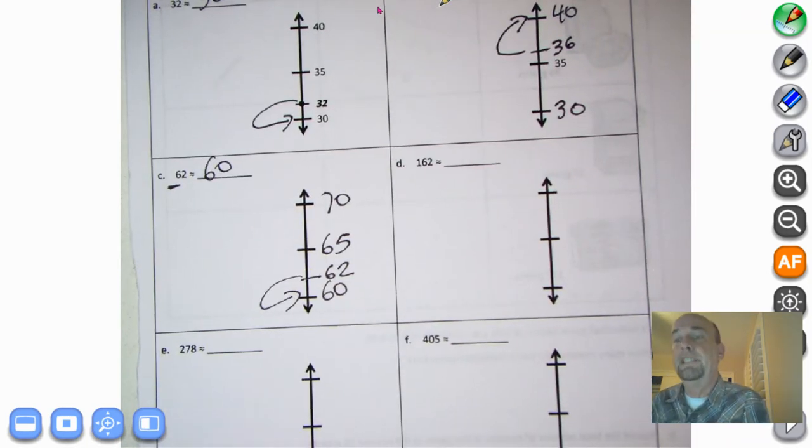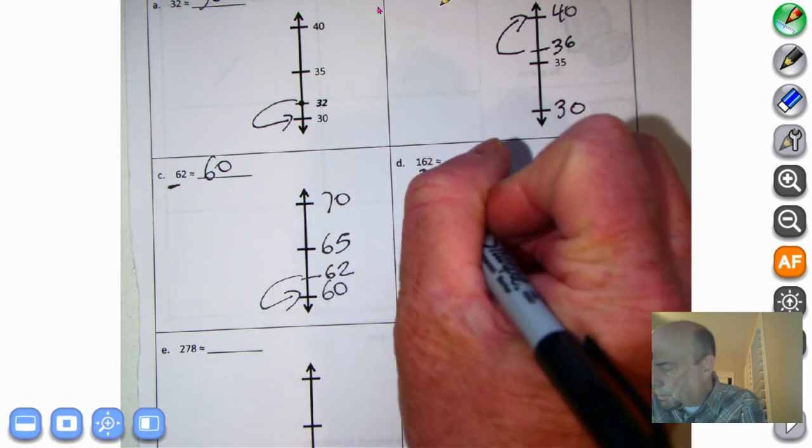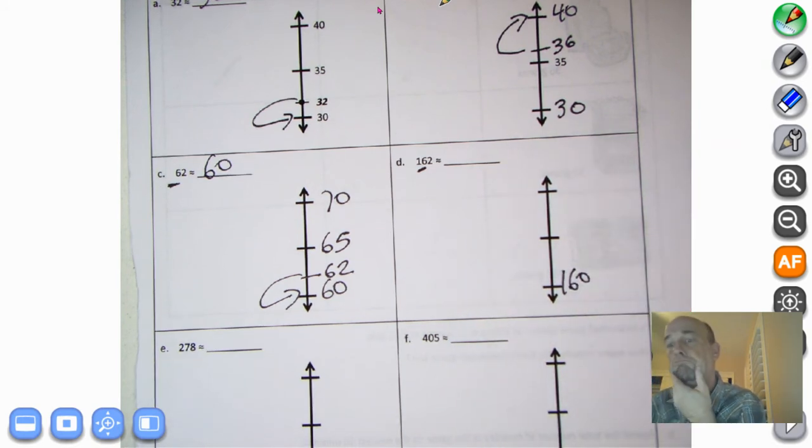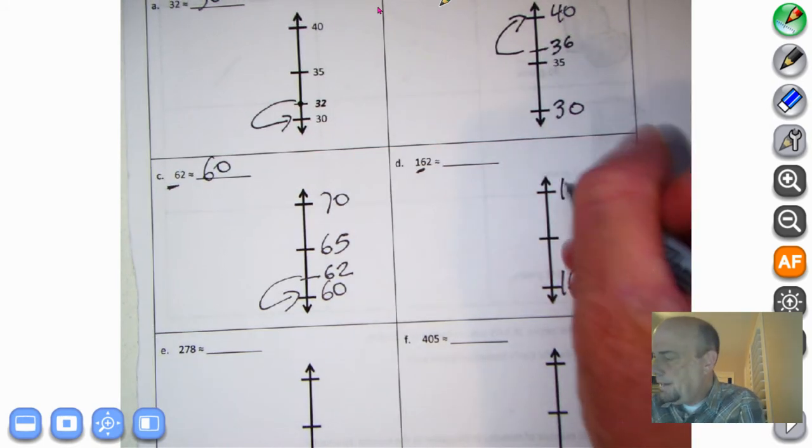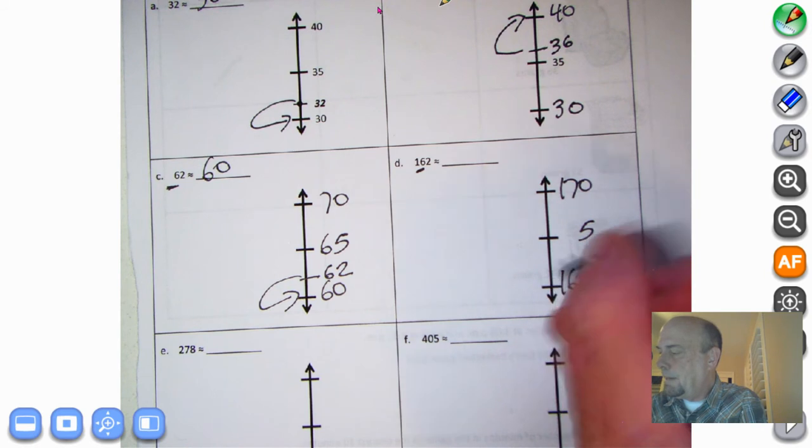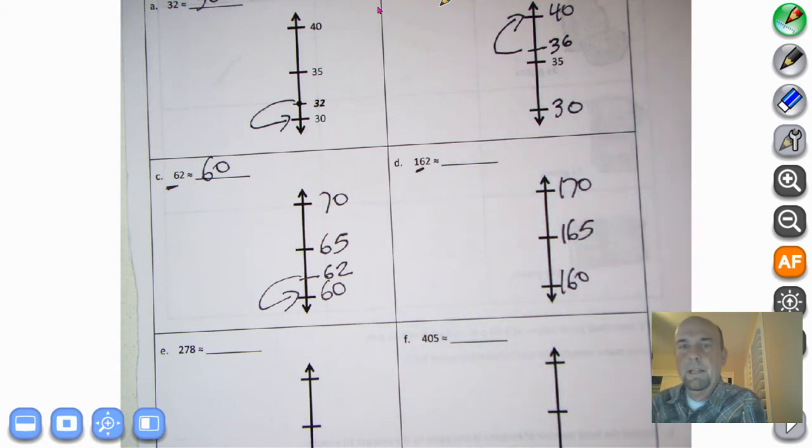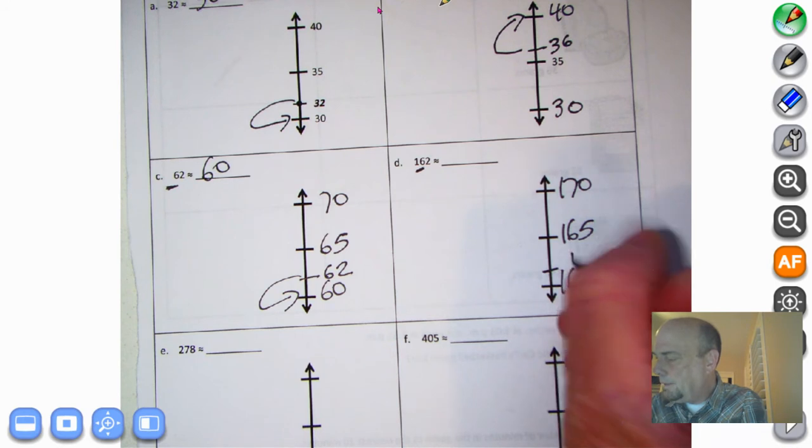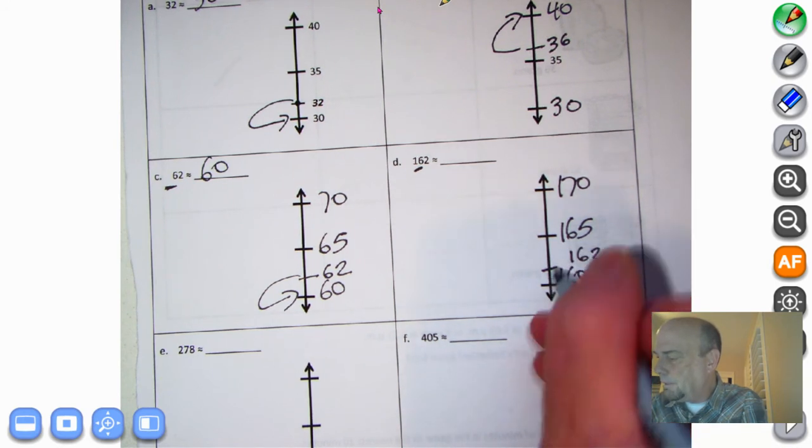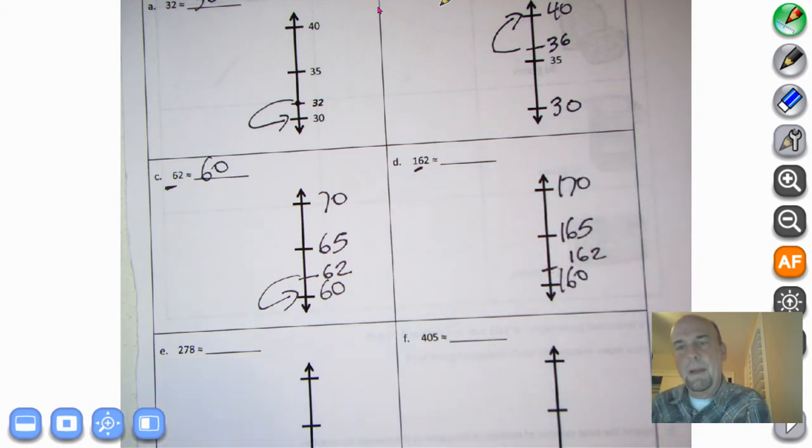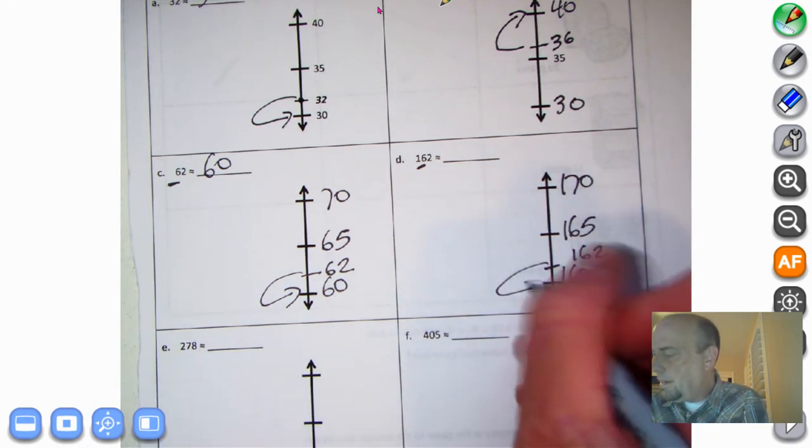Now we're getting into the three-digit numbers. Look at the 10 space, because we're rounding to the nearest 10. So we have 160. What's 10 more than 160? 170. And what's the midway or halfway point? I know it's going to have a five in it. 161, 162, 163, 164, 165. Look at that. So we're at 162, just like over here, except we have a hundreds. So I'm going to go right here with 162. So what am I closer to? I'm going to, of course, round down to 160.